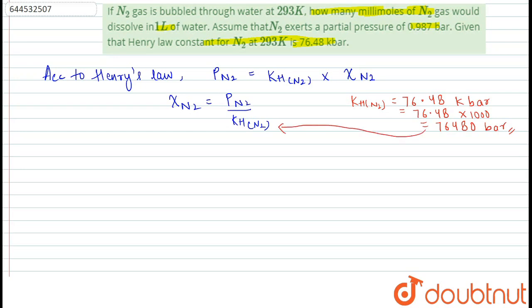Now, we will put it here and derive the mole fraction of N2: 0.987, which is the partial pressure given, divided by 76,480 bar gives out 1.29 into 10 raised to the power minus 5. This is the mole fraction of nitrogen.